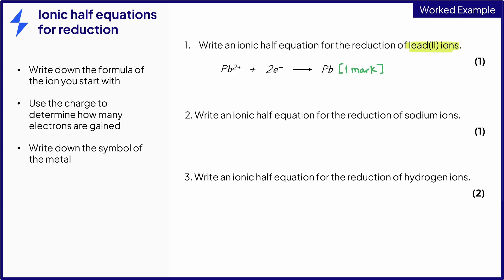Example 2 asks for the ionic half equation for the reduction of sodium ions. Sodium is a metal in group 1 of the periodic table and forms ions with a 1+ charge. This ion will gain 1 electron to form sodium metal atoms, the formula of which is simply its chemical symbol.